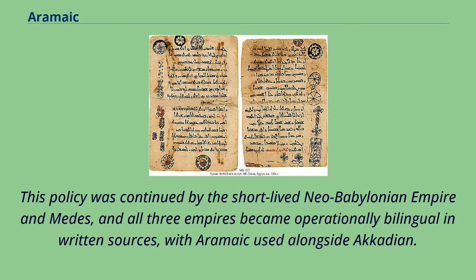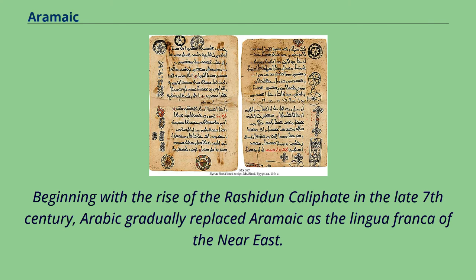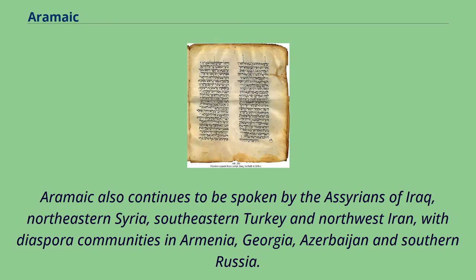The Achaemenid Empire continued this tradition, and the extensive influence of these empires led to Aramaic gradually becoming the lingua franca of most of Western Asia, the Arabian Peninsula, Anatolia, the Caucasus, and Egypt. Beginning with the rise of the Rashidun Caliphate in the late 7th century, Arabic gradually replaced Aramaic as the lingua franca of the Near East. However, Aramaic remains a spoken, literary, and liturgical language for local Christians and some Jews. Aramaic also continues to be spoken by the Assyrians of Iraq, northeastern Syria, southeastern Turkey, and northwest Iran, with diaspora communities in Armenia, Georgia, Azerbaijan, and southern Russia. The Mandaeans also continue to use Mandaic Aramaic as a liturgical language, although most now speak Arabic as their first language.